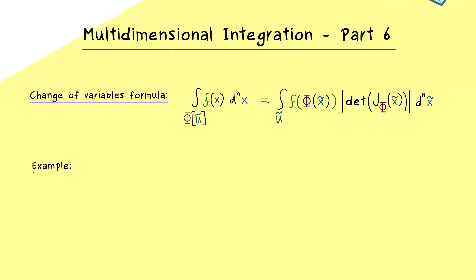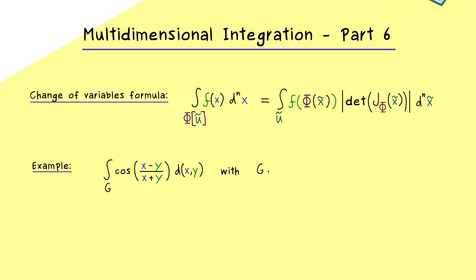The best application is a two-dimensional example because it is still complicated enough but we can sketch it. We have an integral with two variables, and here we have the cosine function with x minus y divided by x plus y inside. We integrate this function over the domain g, which I will explain shortly. Note that we are actually working on the right-hand side already, because we immediately see this phi function inside the cosine function.